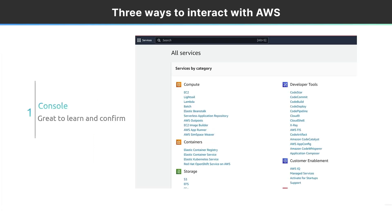There are three ways to interact with AWS. The first is Amazon's management console, which is simply a web page. It's great to learn and confirm things. They call it the console, the management console, or the AWS web page — and it's one of the easiest ways to interact with and create objects on AWS.